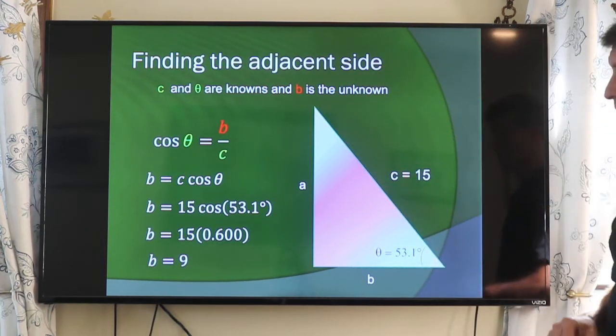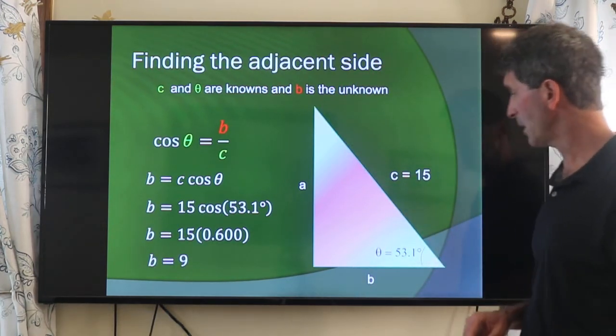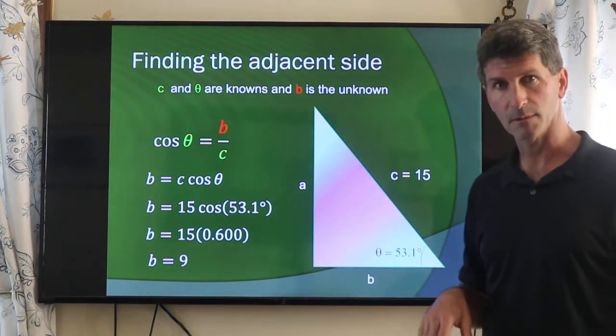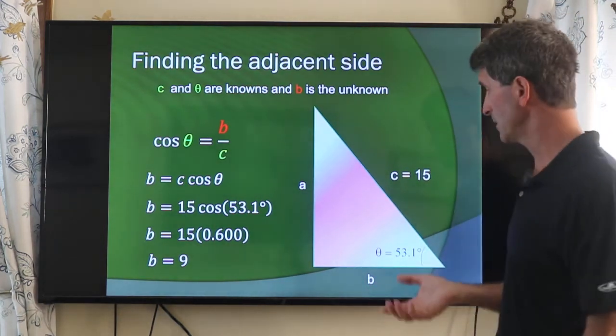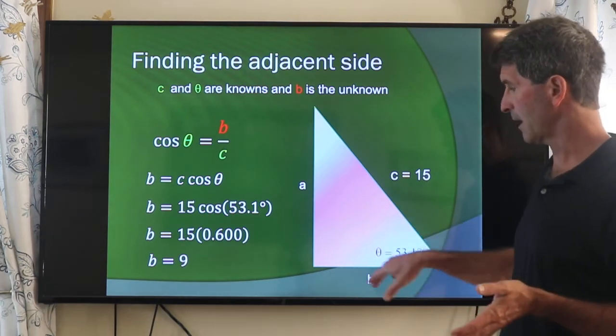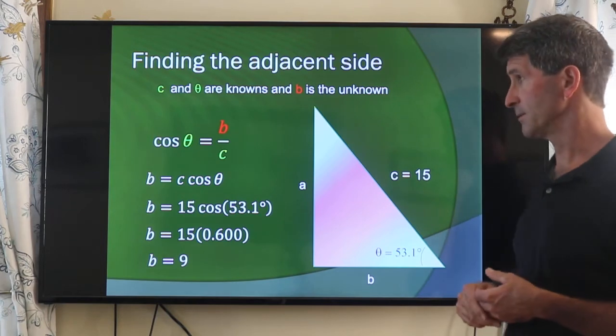Do the same thing with cosine. Let's say that we want to find b this time, known c and θ. Same initial known quantities. We found a. Now we're going to find b using cosine θ.